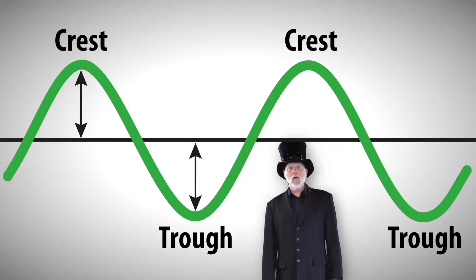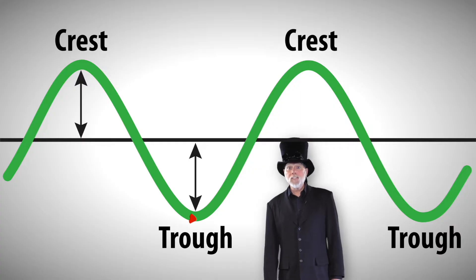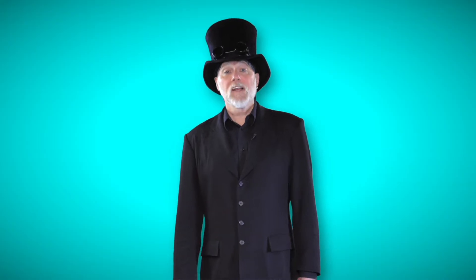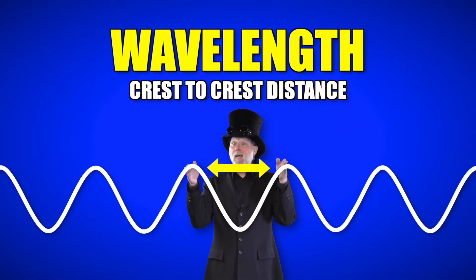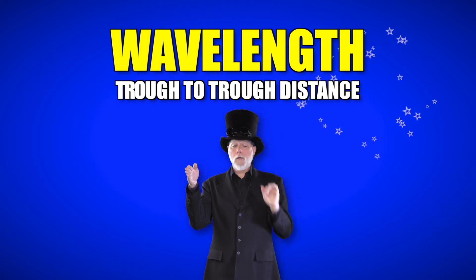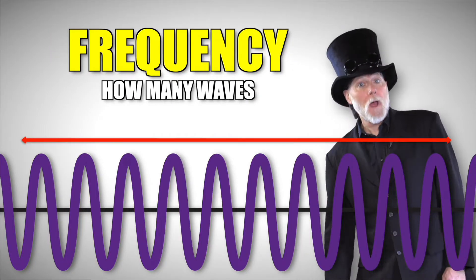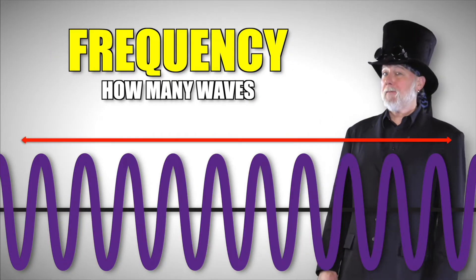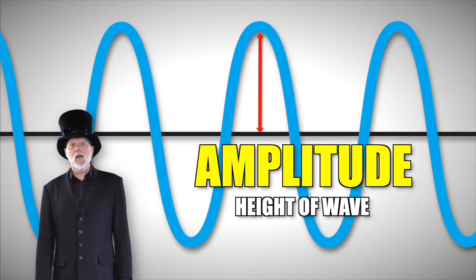The peak or highest point of a wave is called the crest. The lowest point of a wave is called the trough. Waves can have distinctive characteristics or properties: the wavelength — the distance from crest to crest or trough to trough; the frequency — the number of waves in a given amount of time; and the height of a wave.